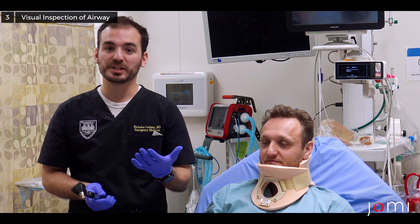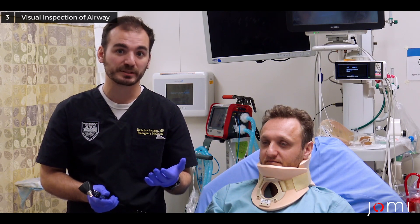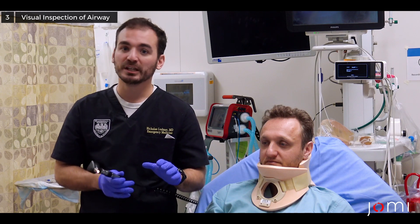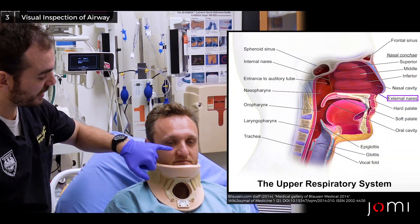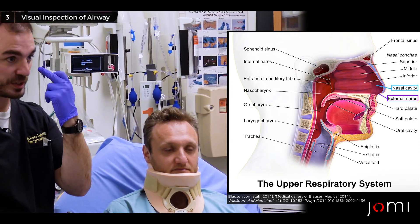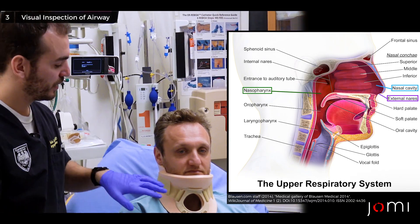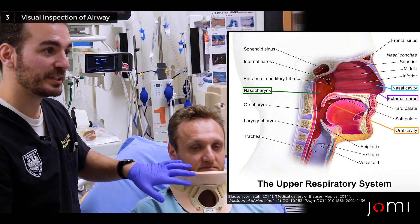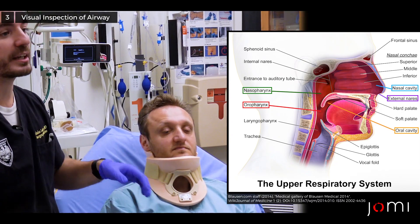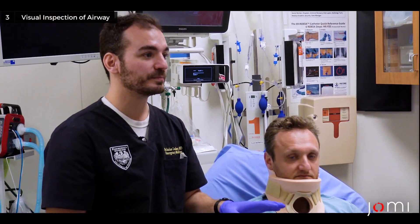In addition to listening, we're also going to do a visual inspection of the airway. The airway is composed of the nares (the nostrils), the nasal cavity just behind those, the nasopharynx even further back, the mouth (the oral cavity), the oropharynx (the back of the throat), and then the structures in the neck — the larynx and the trachea. We're going to do a visual inspection of all of it.